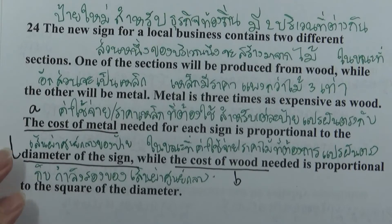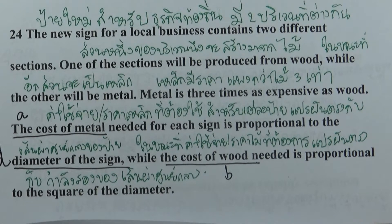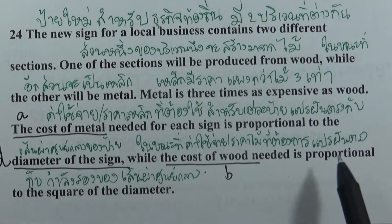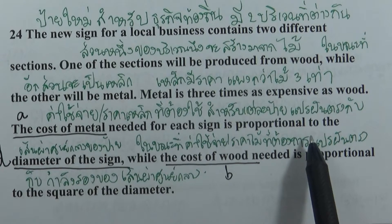The cost of wood is proportional to the square of the diameter, while the cost of metal is proportional to the diameter of the sign. These are the key proportional relationships needed to set up the equations.